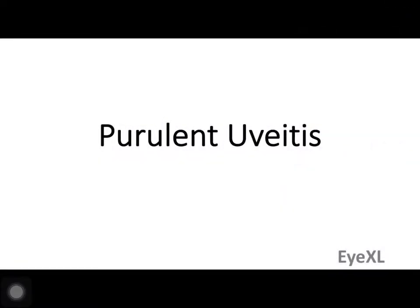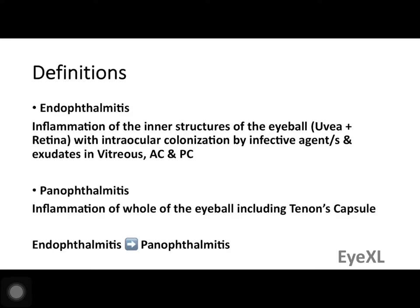Good evening everyone. Let's discuss endophthalmitis and panophthalmitis today. Both these conditions come under purulent uveitis. The word 'purulent' is used because there is formation of pus, and 'uveitis' because invariably one or more layers of the uvea are involved. So both endophthalmitis and panophthalmitis together are called purulent uveitis.